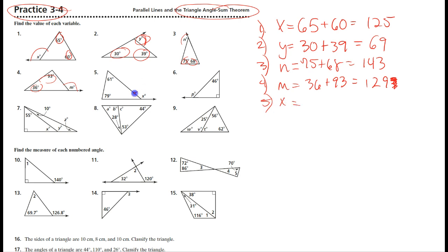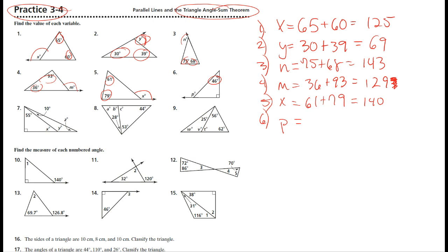X equals sixty-one plus seventy-nine. For this problem, they only showed me the measurement of one angle — but the little square means ninety degrees. So we've got forty-six plus ninety, which is one hundred and thirty-six.